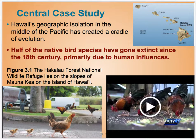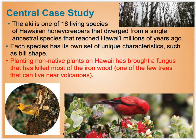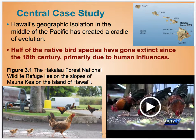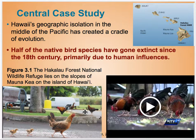This chapter starts out with a case study of the Hawaiian Islands. They have the Acai bird there, and there are 18 different species of it, but it's been highly threatened. Humans have brought in non-native species that introduced fungus and killed the native trees this bird lives on. Additionally, Hawaiian chickens have gotten loose and are all over certain islands, eating native amphibians, reptiles, and other birds' eggs.